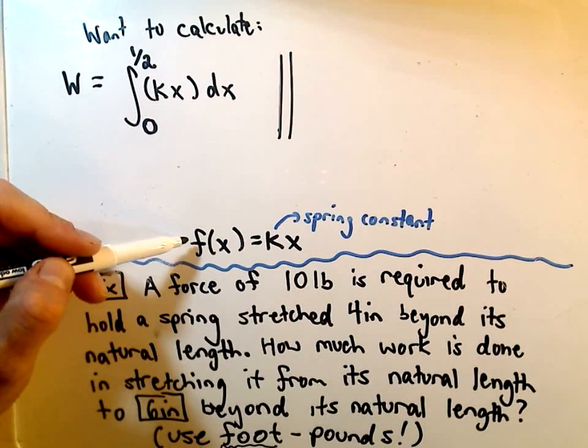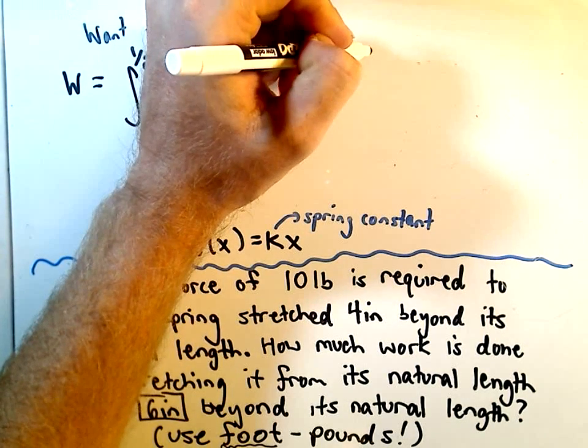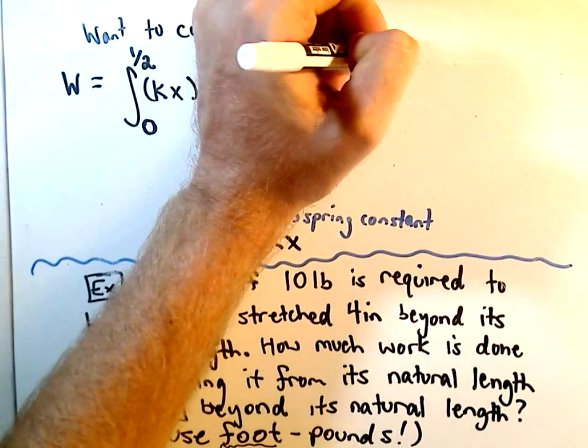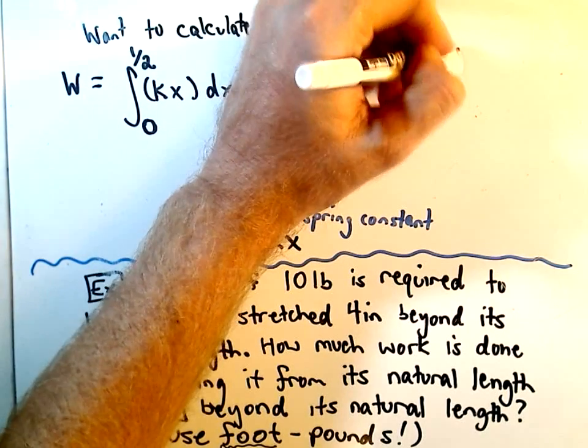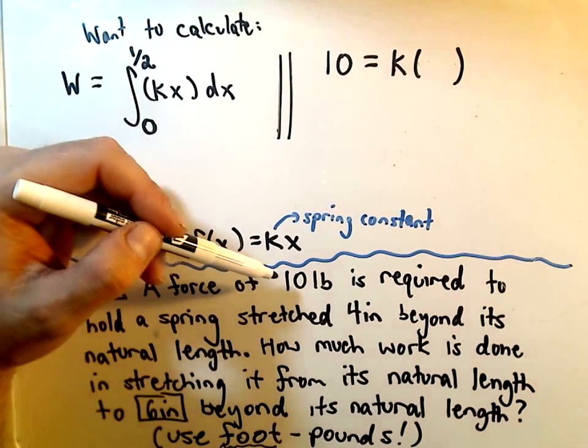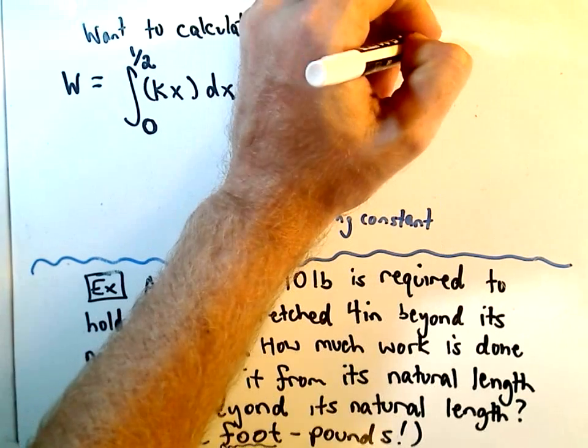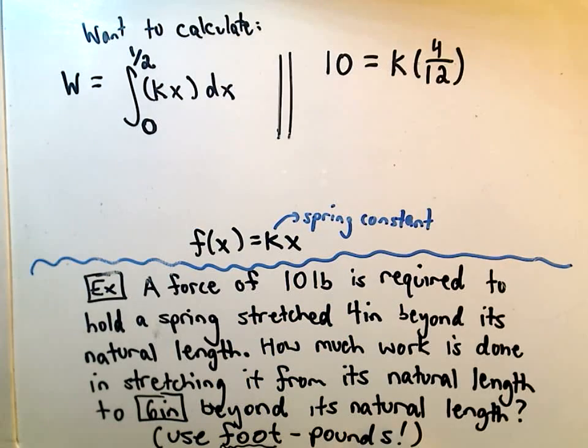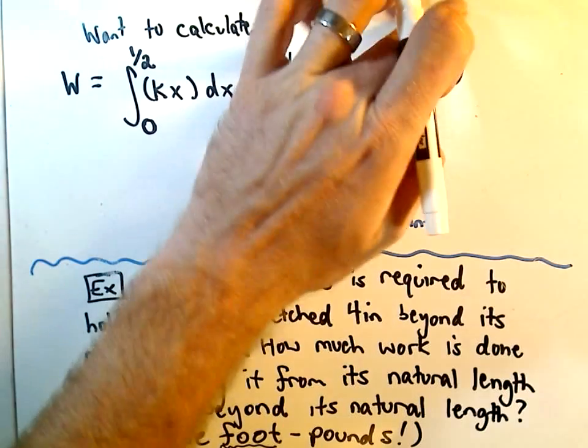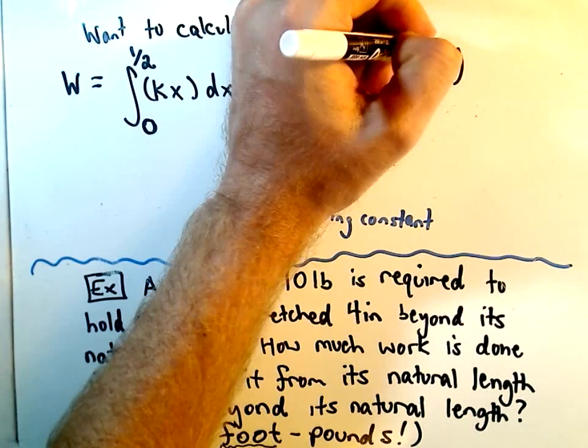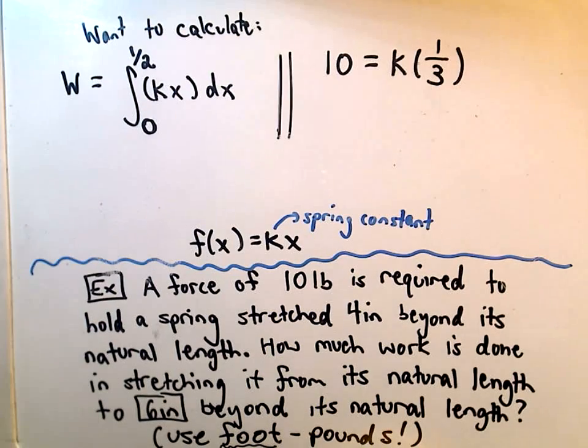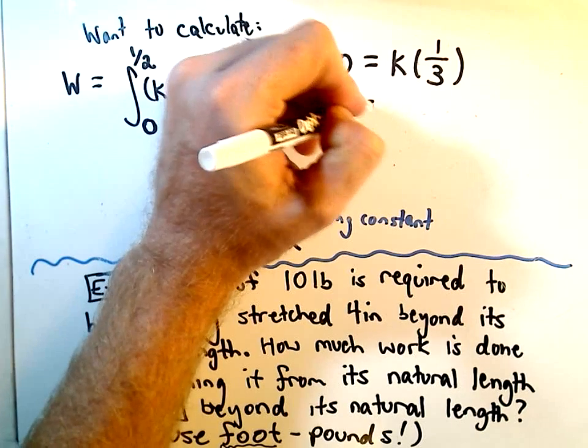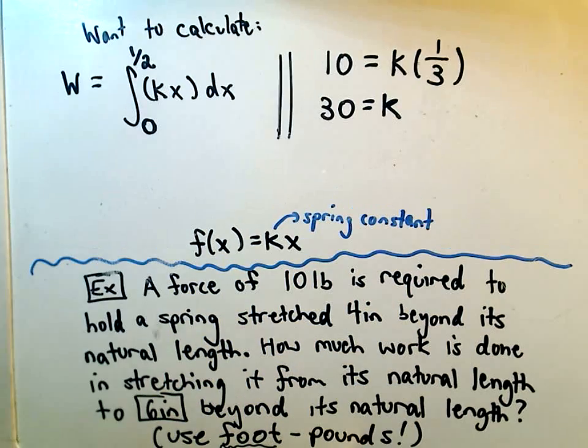If we fill in our force equation, it says we have a force of 10 pounds. So, we have k times x, and we said a force of 10 pounds is required when you stretch it 4 inches beyond its natural length. So, 4 inches is going to be 4 twelfths of a foot, or more simply, 4 inches is going to be 1 third of a foot. So, if we multiply both sides by 3, we'll get that our spring constant in this problem has value 30.